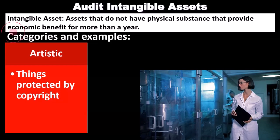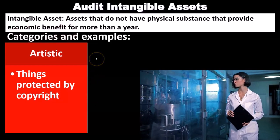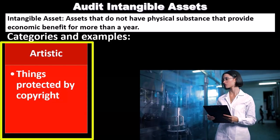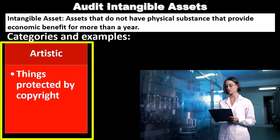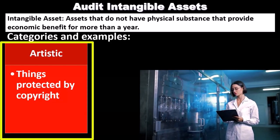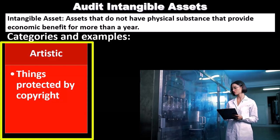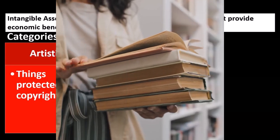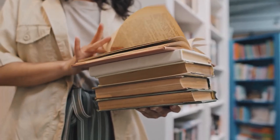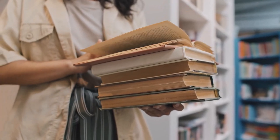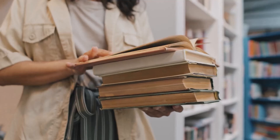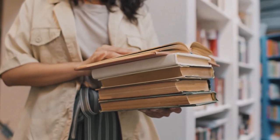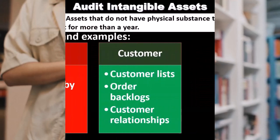Types of categories of intangible assets will include artistic things — anything that has a copyright to it could be some form of intangible asset. Note that the copyright itself is the intangible asset. If we have a book or a painting, the books and paintings are physical things, but the copyright is the claim to the material, the idea, the concepts of them. Therefore, those copyright-type items are intangible assets.